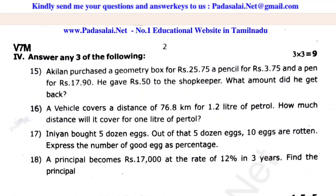Question 15: Akeri purchased a box for rupees 25.75, a pencil for rupees 3.75, and a pen for rupees 17.90. He gave rupees 50 to the shopkeeper. What amount did he get back?